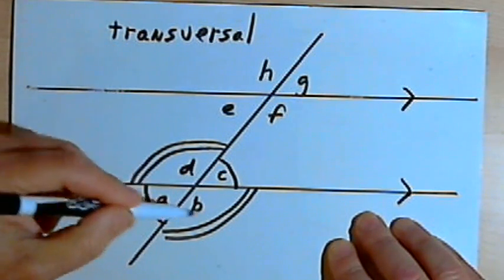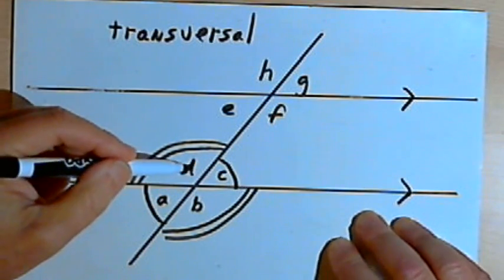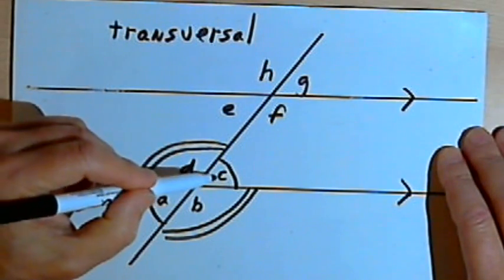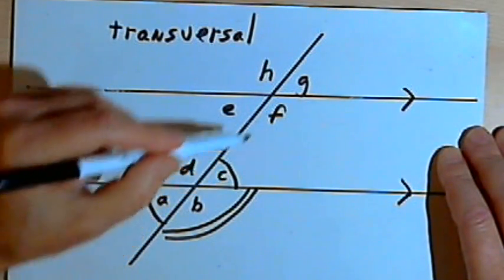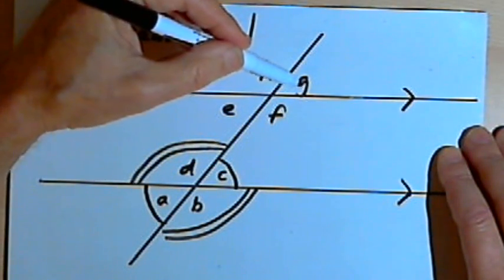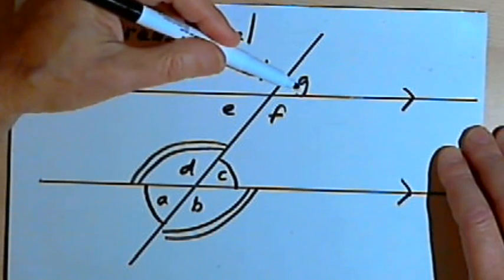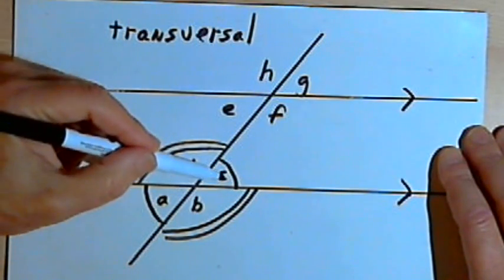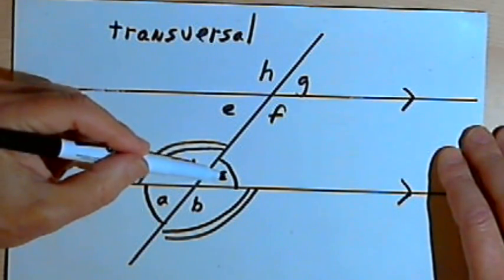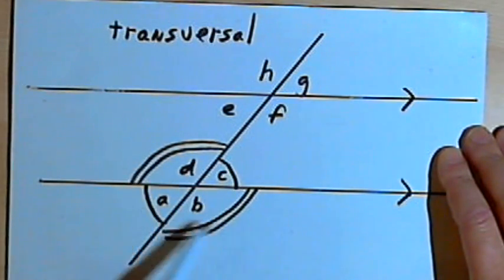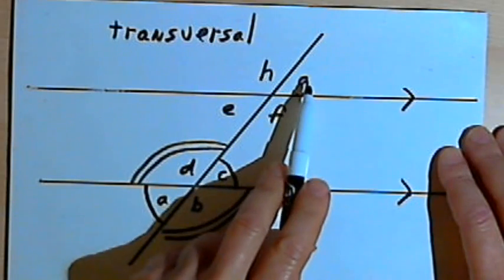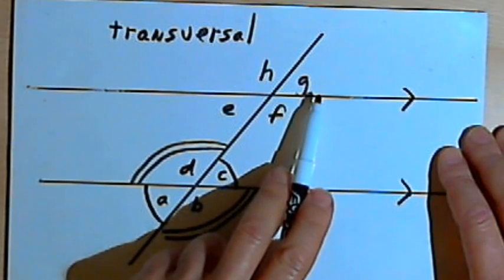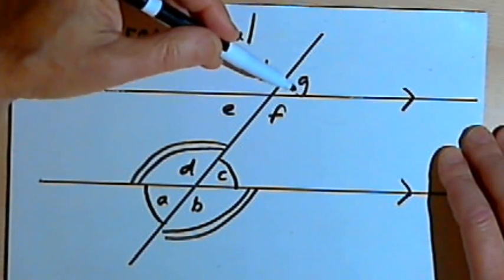Now I want to look at the relationship between angles A, B, C, D and angles E, F, G, H. We're going to find that angle C equals angle G. If you look at them, they both appear in corresponding places on their respective parallel lines. Angle C is the upper right angle of the four angles on the lower line, and angle G is the upper right angle of the four angles on the upper line — and those two angles are equal.